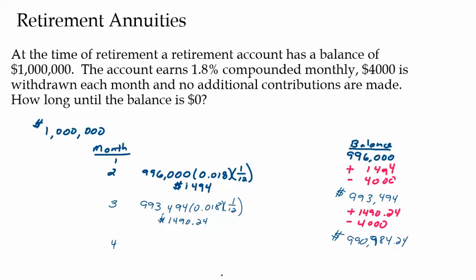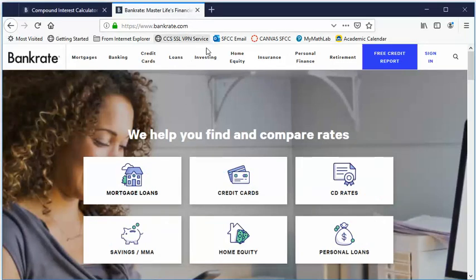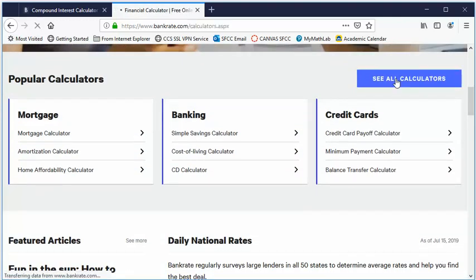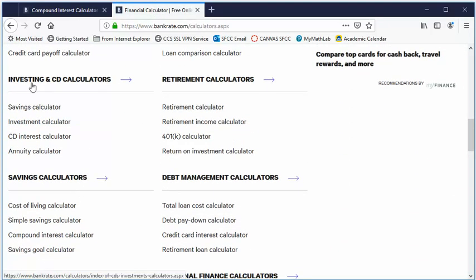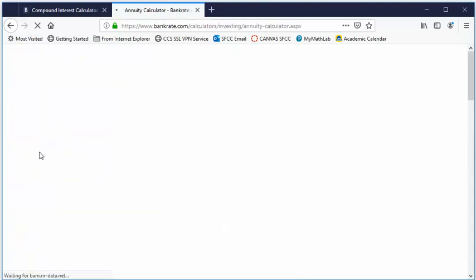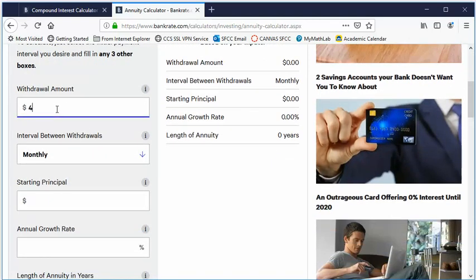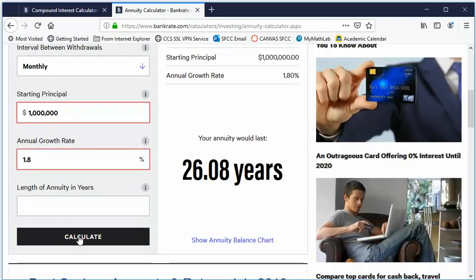Let's go look at a website that will do this for us. I like bankrate.com. There's lots of different websites out there that will do calculators for you. If you go to bankrate.com and scroll down to see all calculators, the one we're going to use is under annuities or under investing and annuity calculator. Our withdrawal amount was $4,000 monthly. Our starting principal was a million. Our growth rate was 1.8%. And then we'll just hit calculate. It says right here, 26 years. That's how long that's going to last.